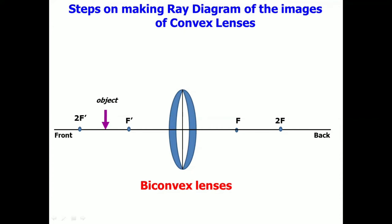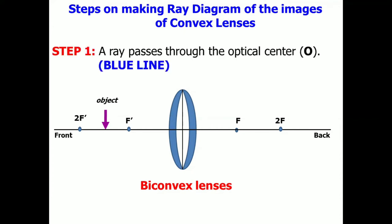Let's have step number one. A ray passes through the optical center. This is represented by the blue line. And it looks like this. That is our first step.